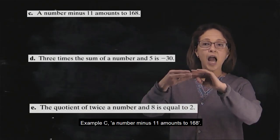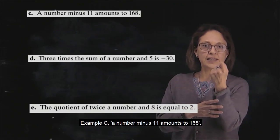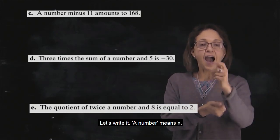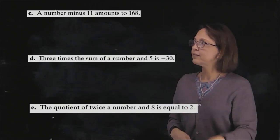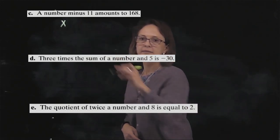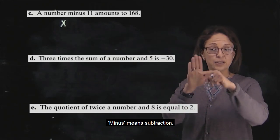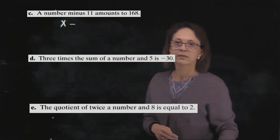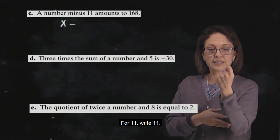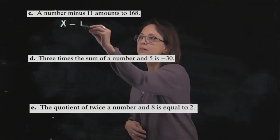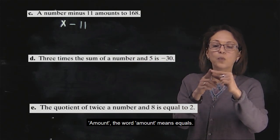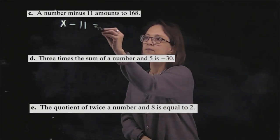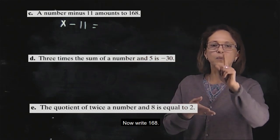Example C. A number minus 11 amounts to 168. A number means x, minus means subtraction, write 11. The word amounts means equal. And now write 168.